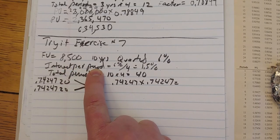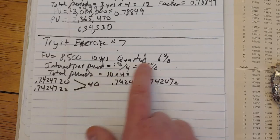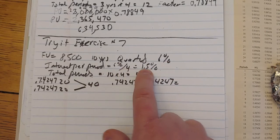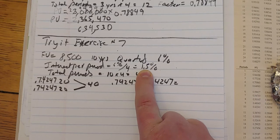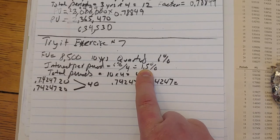All right, so we know that the interest rate per period, if it's quarterly, that's going to be four times a year. So 6% divided by four gives us 1.5% per period. So that'll be what we look at along the top of the table.